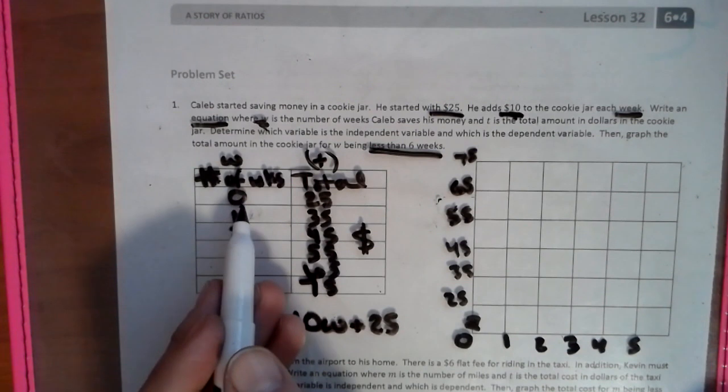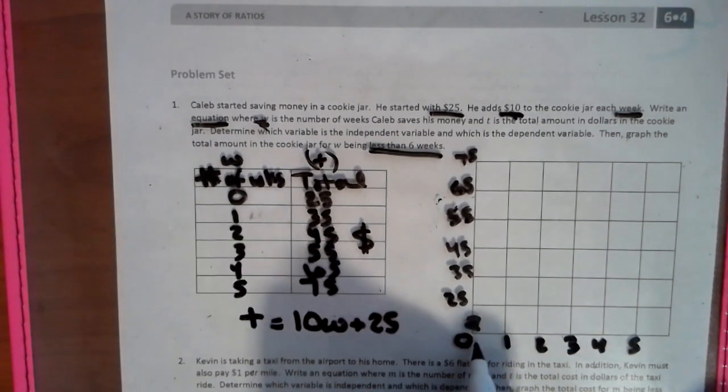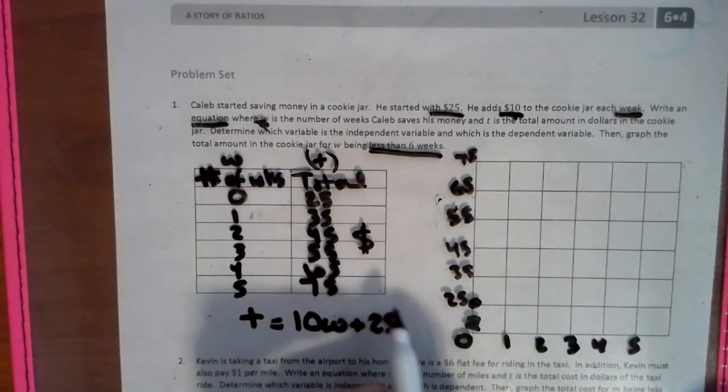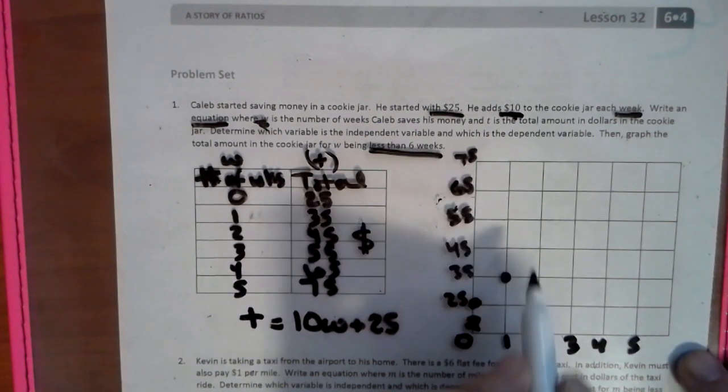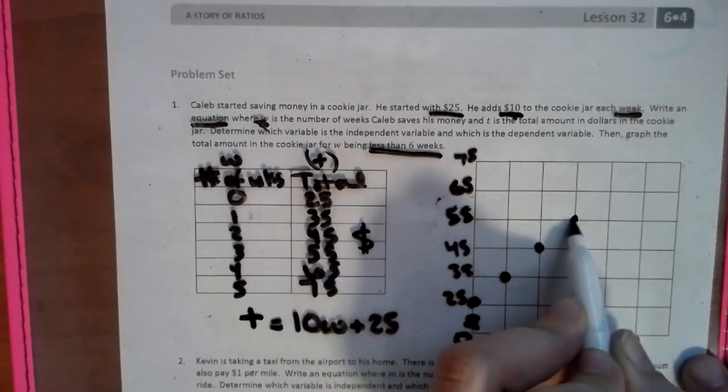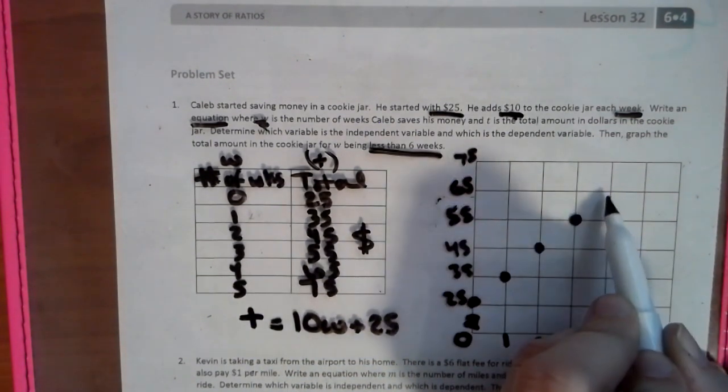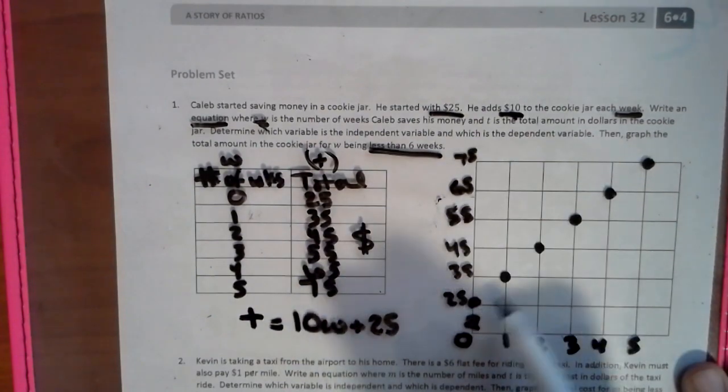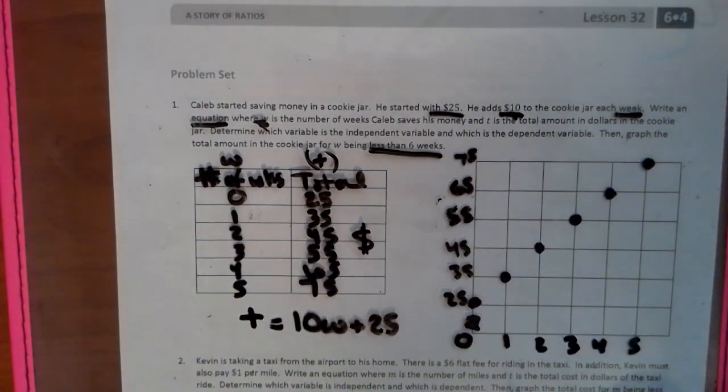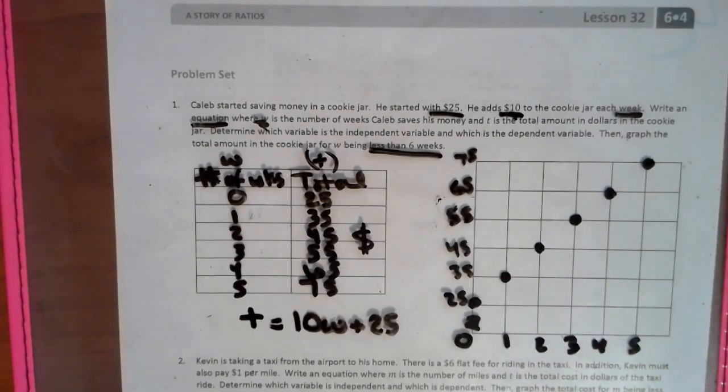So then we just plot. And for every 0, there's still 25. So 0, 25, 1, 35, 2, 45, 3, 55, 4, 65, 5, 75. And as you can see, this is a straight line.